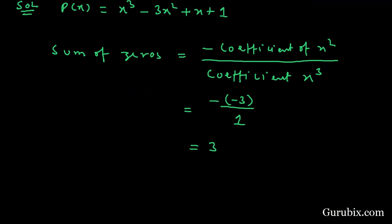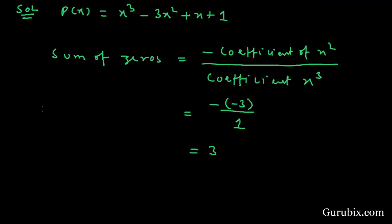The zeros are a - b, a, and a + b. If we find the sum of these zeros, we get -b + b cancelled, and here is a + a + a, which means 3a. Therefore, a equals 1.